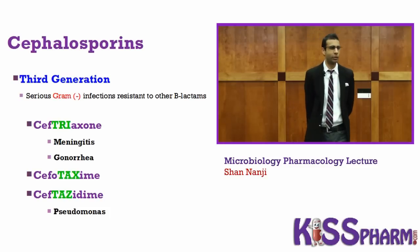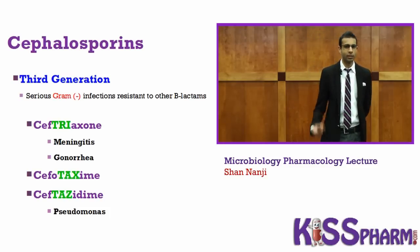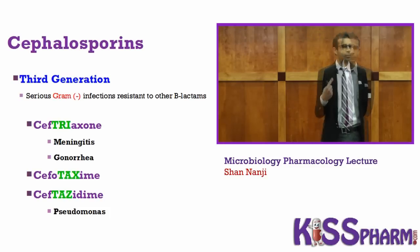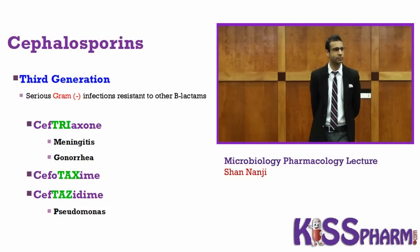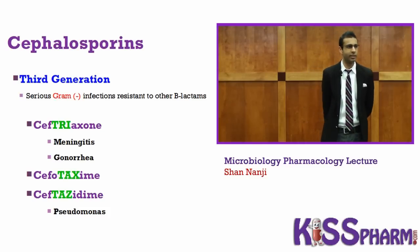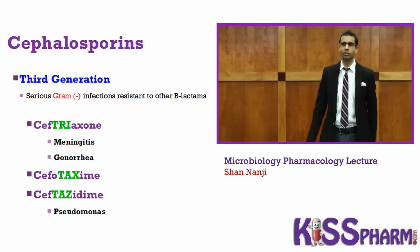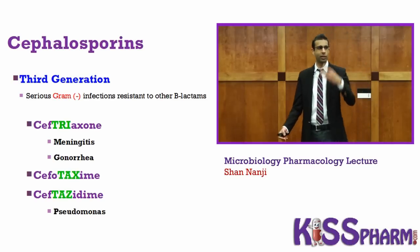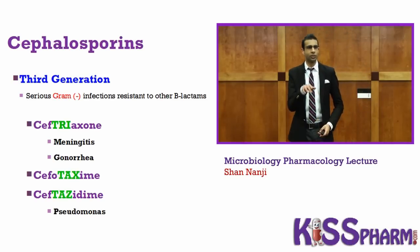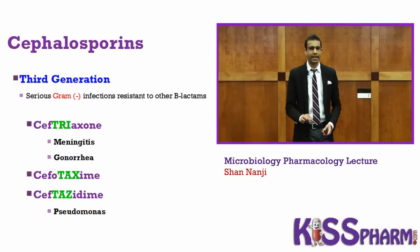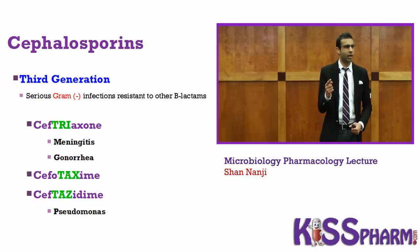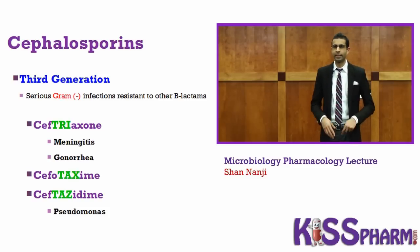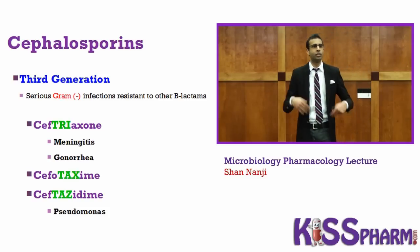Third generation is easy. The third generation drugs have three-letter words in the middle that start with T: Try, Tax, and Taz. T reminds you of third generation. There are three-letter words right in the middle: Try, Tax, and Taz.